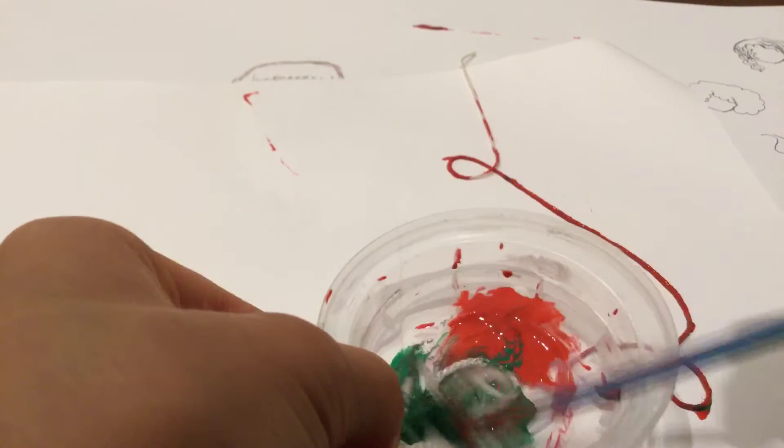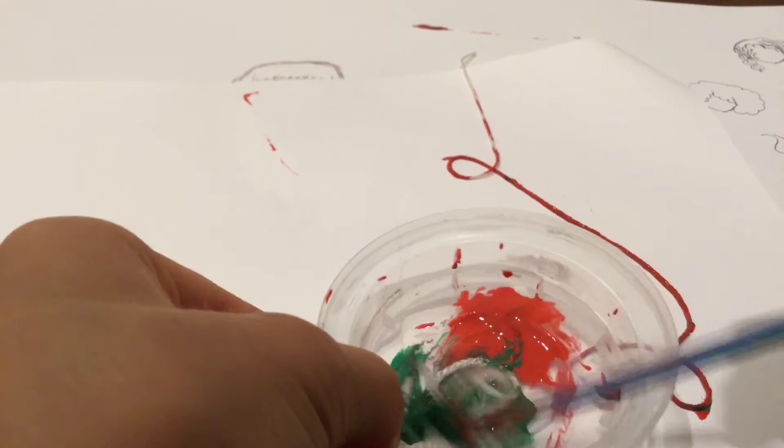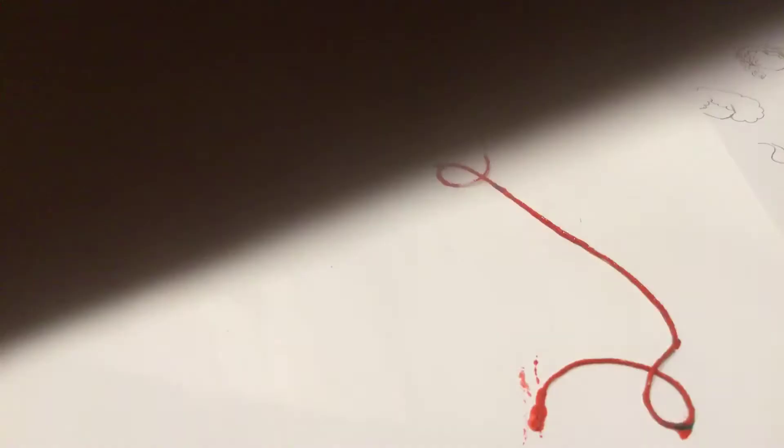So then you're going to put the string on your paper and you can make the two strings overlap. Kind of just put it down randomly, and then once you do that you can either put a paper on top of the paper that you already put the string on, or you can just fold the paper in half like I'm doing.